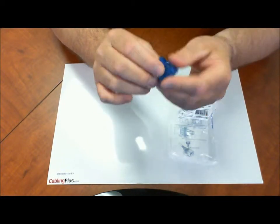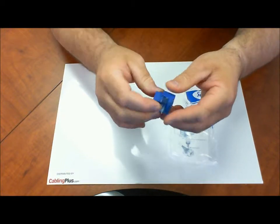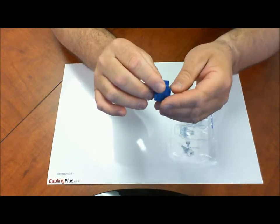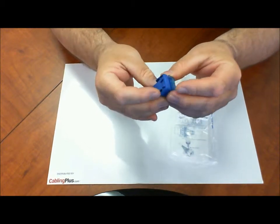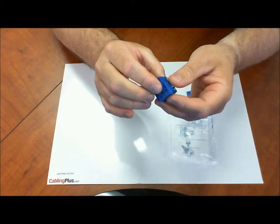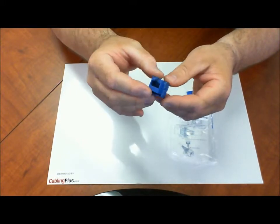The good thing about this is once it's terminated it's going to easily pop right into any face plate, wall plate, decor or decorative inserts and you can also use it on blank patch panels anywhere where you're going to need to create a Cat5e outlet.